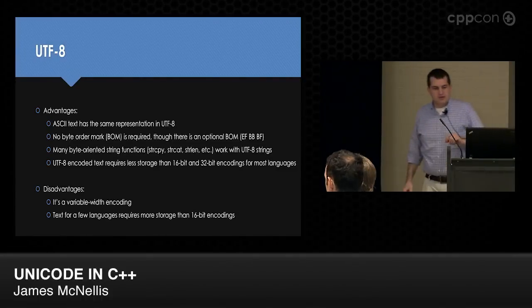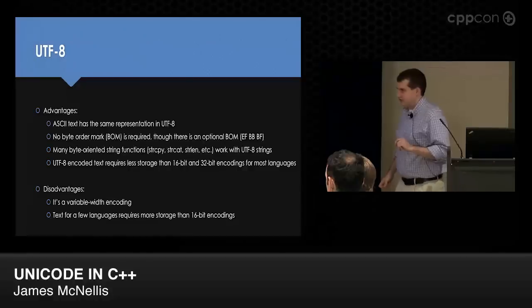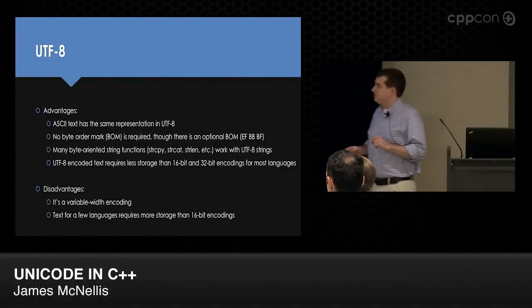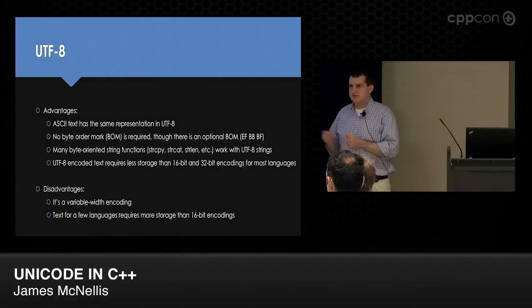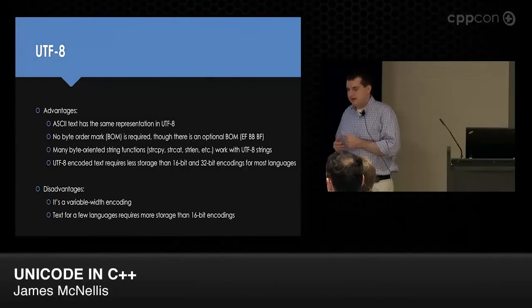UTF-8 doesn't have the problems of legacy variable-width encodings. You can look at any byte in isolation and know whether it's a lead or trail byte — all trail bytes have the top two bits set to '10,' so it's self-synchronizing. If you're pointing at a lead byte, you know exactly how many trail bytes follow by counting the leading ones. UTF-8 has many advantages: ASCII text has the same representation, you don't need a byte order mark because the code unit is a single byte, there is an optional BOM (EF BB BF, which is FEFF encoded as UTF-8), many byte-oriented string functions still work, and UTF-8 requires less storage than 16-bit and 32-bit encodings for most languages. Some languages may require up to 50% more space than UCS-2, but that size difference largely doesn't matter in practice because real-world text includes ASCII markup and compresses similarly.